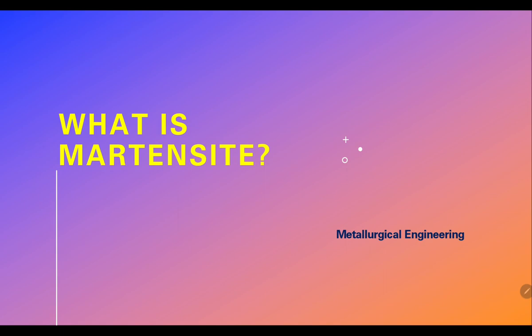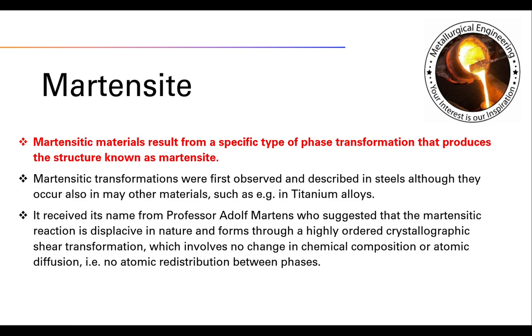Hello friends, welcome to our YouTube channel Metallic Engineering. In this video we will see what is martensite. Martensite is a material which results from a specific type of phase transformation that produces the structure known as martensite. This martensitic transformation was first observed and described in steels, although it also occurs in other materials like titanium alloys and nickel martensite.